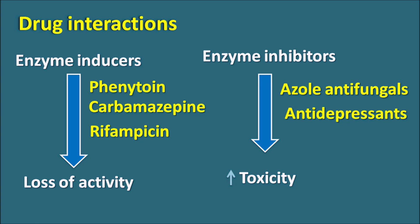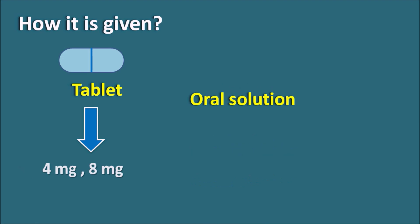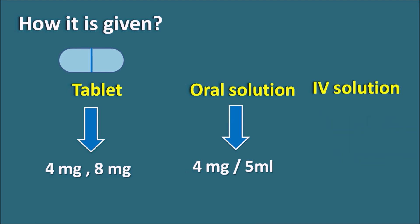Ondansetron should not be given with apomorphine because this combination produces severe hypotension. In terms of dosage forms: the drug is available as tablets at doses of 4 mg and 8 mg, as an oral solution at 4 mg per 5 mL, and also as an IV solution in ampoules of 4 mg per 2 mL. The dosage starts at 4 mg and can be increased to 8 mg.